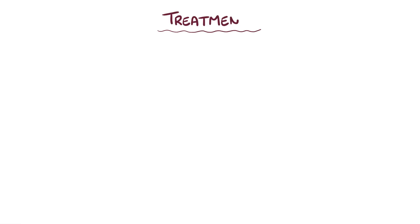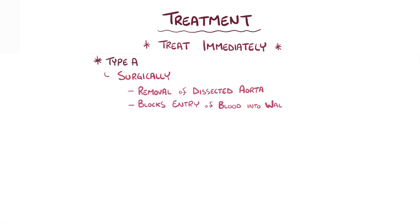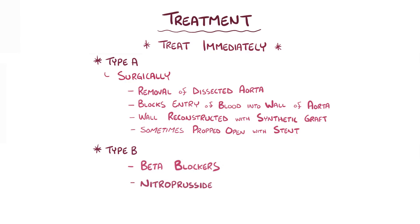An aortic dissection needs to be treated immediately. Type A aortic dissections are treated surgically, where a surgeon removes as much of the dissected aorta as possible and blocks the entry of blood into the wall of the aorta. The aortic wall is then reconstructed with a synthetic graft, sometimes propped open with a wire mesh stent. Type B aortic dissections are treated with beta blockers and nitroprusside.